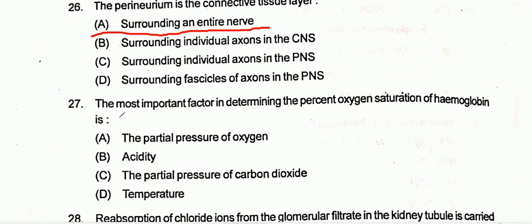Question twenty-seven: the most important factor in determining the percent oxygen saturation of hemoglobin — the answer will be the partial pressure of oxygen. So option A, the partial pressure of oxygen, is the important factor for determining percent oxygen saturation of hemoglobin.